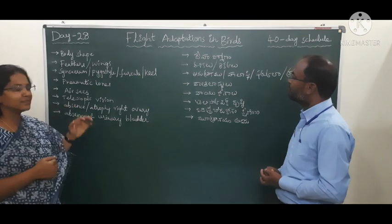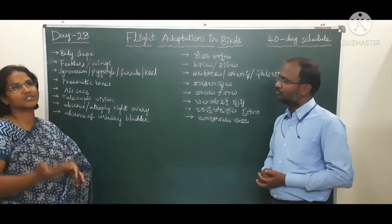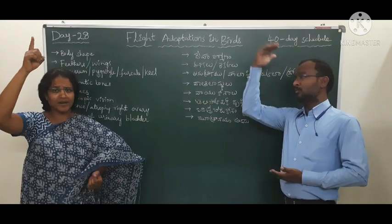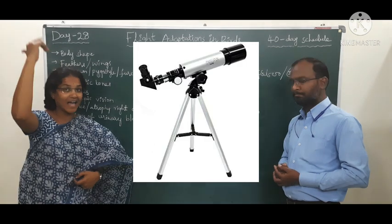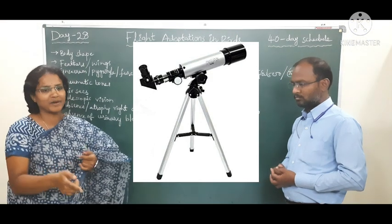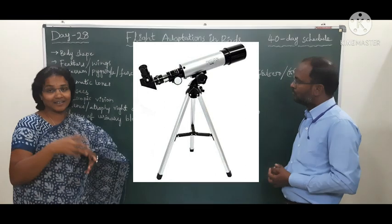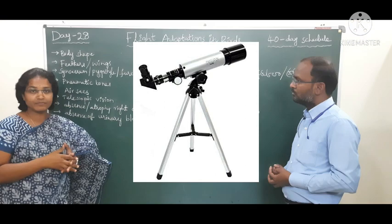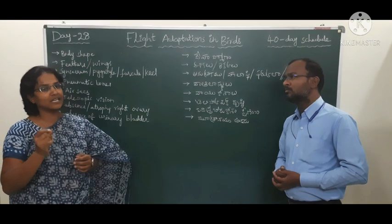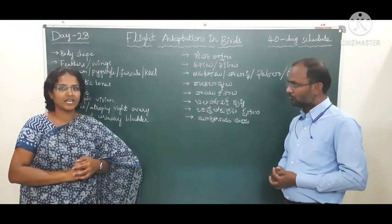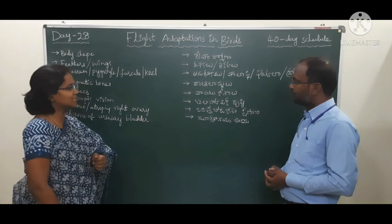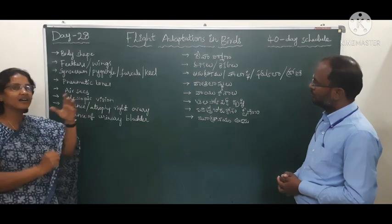Next we come to telescopic vision. Telescopic vision means the bird can watch prey from a very great height while flying high in the sky, and can still spot prey on the ground. This excellent vision is also one type of flight adaptation — this is called telescopic vision.